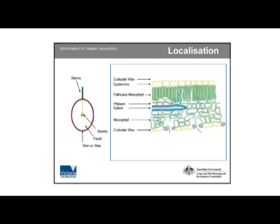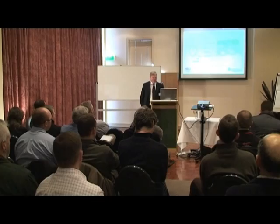So localisation — where is it? This is a representation of a leaf. It could be anywhere in this cross section: the epidermis, the palisade cells where most of the photosynthesis goes on, the phloem transport out of the leaf, the xylem which is the water transport throughout the plant, the spongy mesophyll which is the bottom part, and the cuticular wax on the top and the bottom. There's a wax layer along both surfaces, and the same on the outside of a berry. We'd also want to know: is it in the stems, seeds, flesh, skin, or actually on the wax?